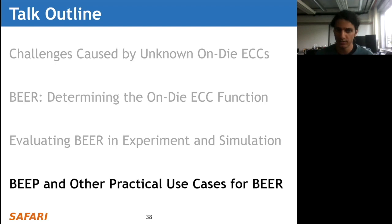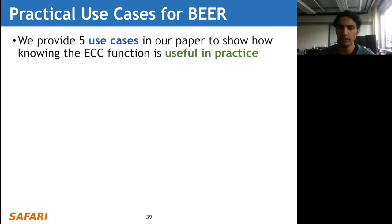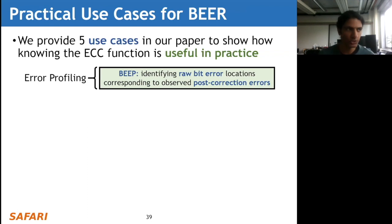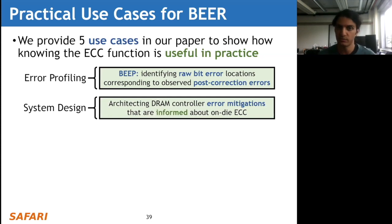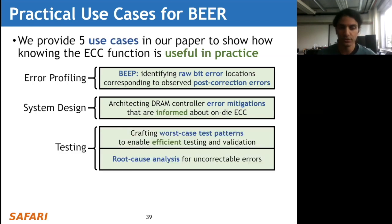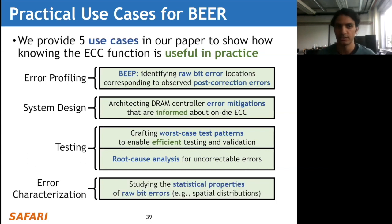Finally I'm going to talk about BEEP and other practical use cases for BEER. In our paper we discuss five use cases demonstrating how knowing the ECC function can be useful. The first is error profiling, where we introduce BEEP to show how knowing the ECC function enables identifying the raw bit error locations corresponding to observed post-correction errors. The second use case deals with system design - architecting DRAM controller error mitigation mechanisms informed about on-die ECC is much better than blindly trying to support arbitrary ECC functions. Our third and fourth use cases deal with testing: knowing the ECC function enables crafting worst-case test patterns and performing better root cause analysis for observed uncorrectable errors.